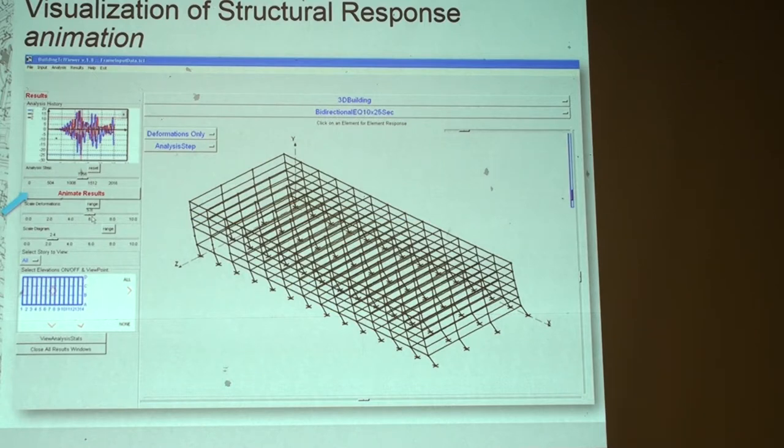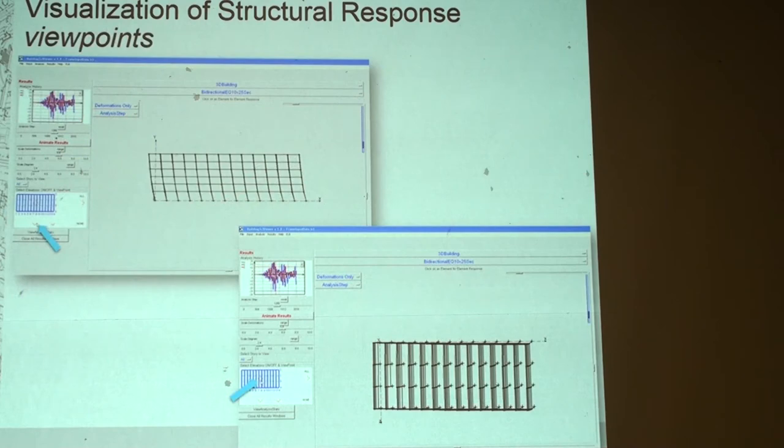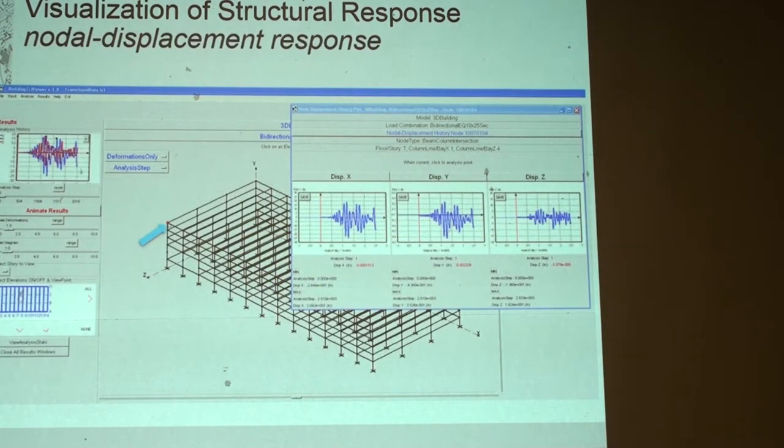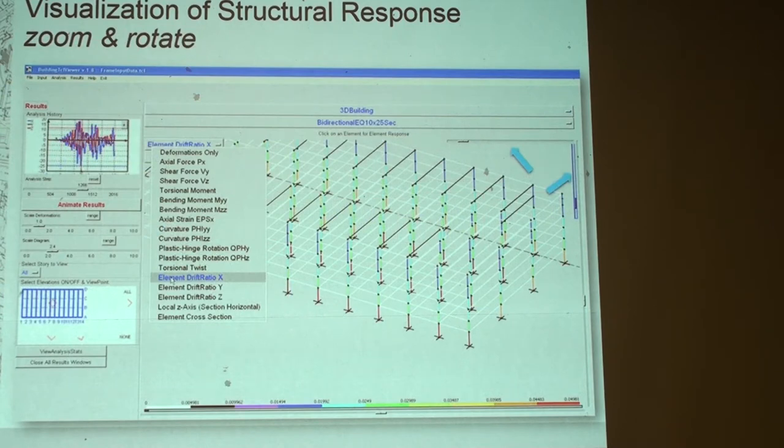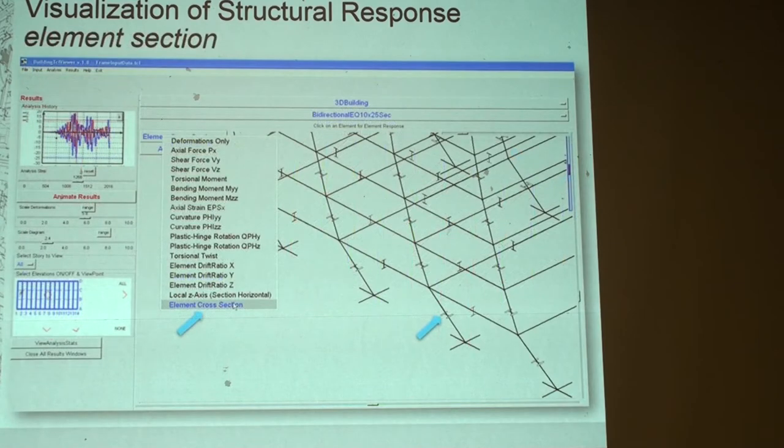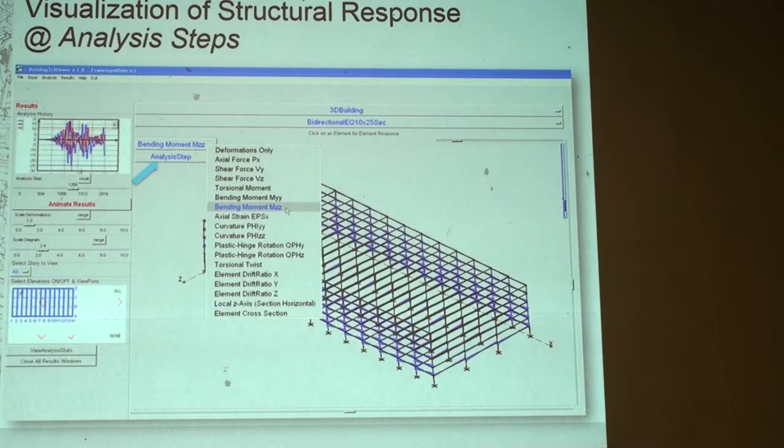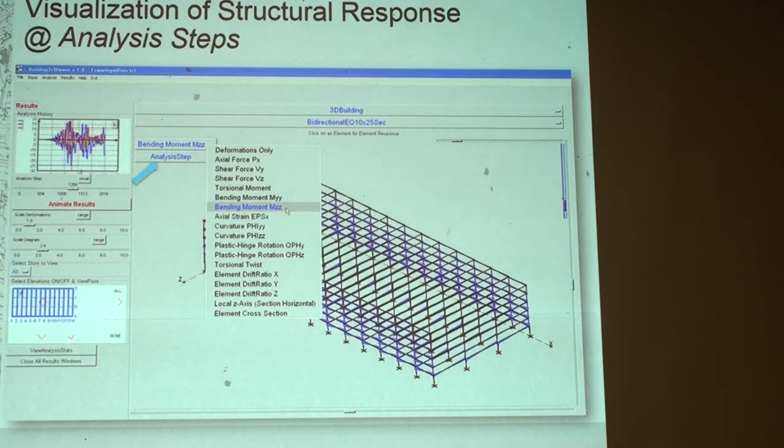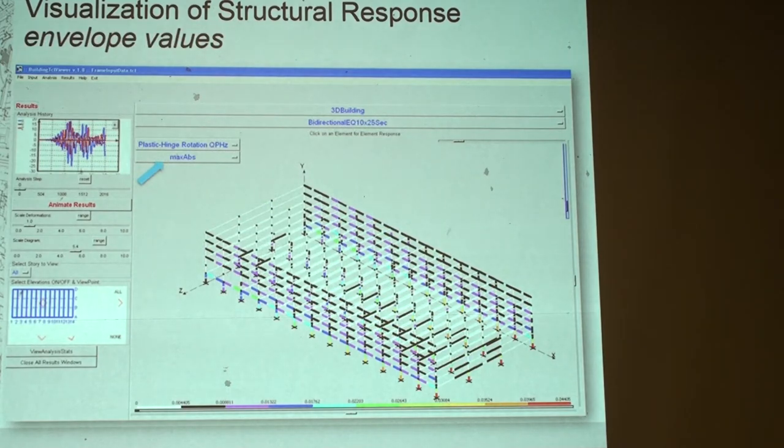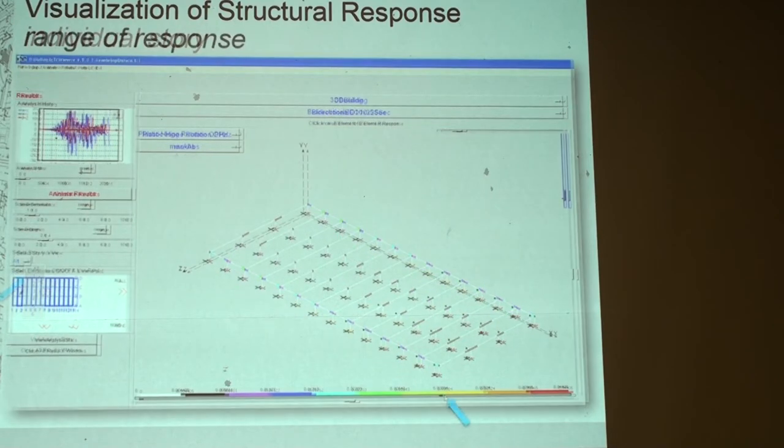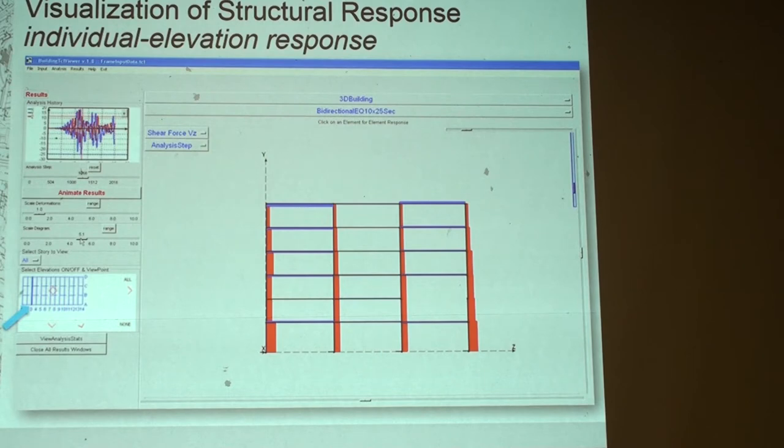So you can actually pick a model that you run and the load combination. And you can actually watch it, visualize it in post-processing, just animate the deformation. You can watch the response history. You can click on a point in that response history and find out what the state of your structure is. There's lots of different ways that you can view it. You can click on a node and get the displacements of that node. You can do some nice color graphics to see which ones are the critical element. You can actually see if you have fiber sections, what those sections look like. You can plot moment diagrams.